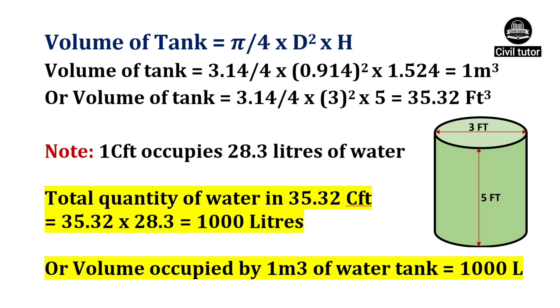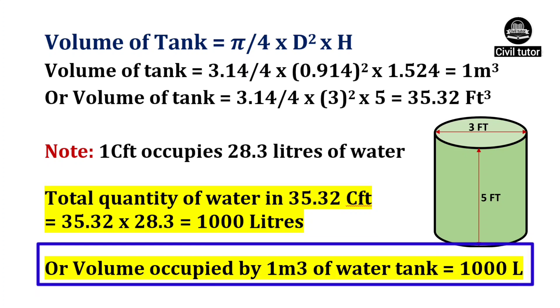It should be noted that 1 cubic feet occupies a volume of 28.3 liters of water. So, the total quantity of water in 35.32 cubic feet will be equal to 35.32 into 28.3, which will be equal to 1000 liters. Hence, the volume occupied by 1 meter cube of water tank will be equal to 1000 liters.